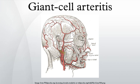Giant cell arteritis can involve branches of the aorta as well, leading to aortic aneurysm. For this reason, patients should be followed with serial chest x-rays.